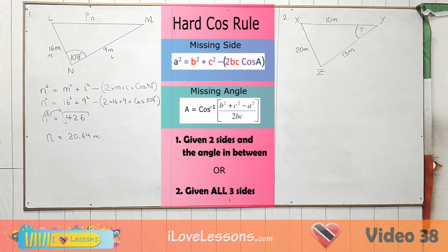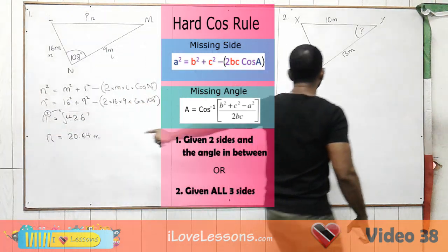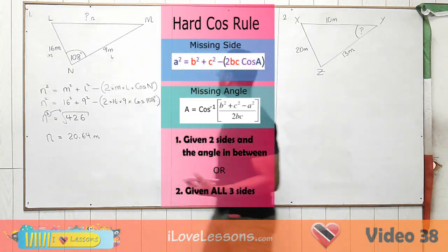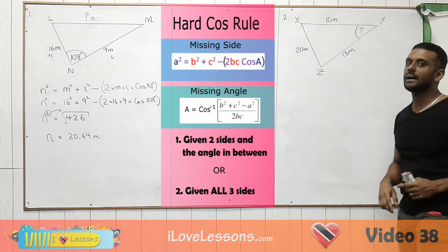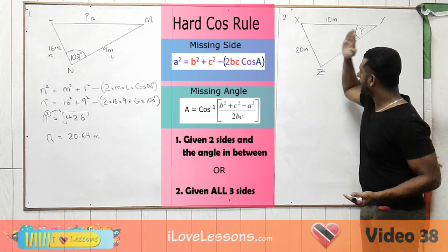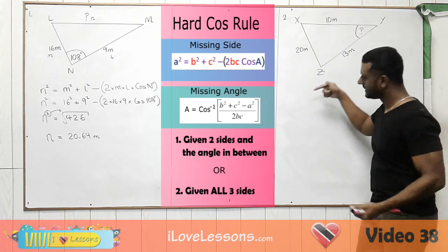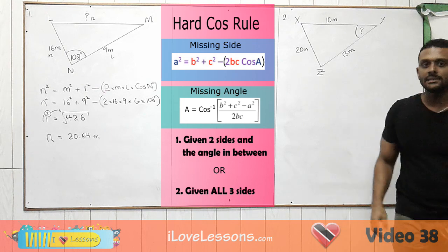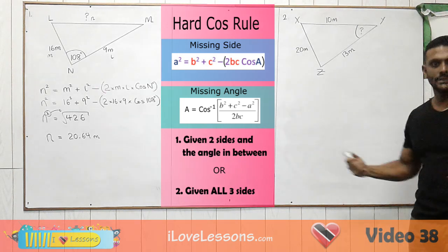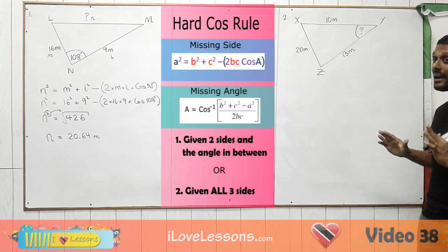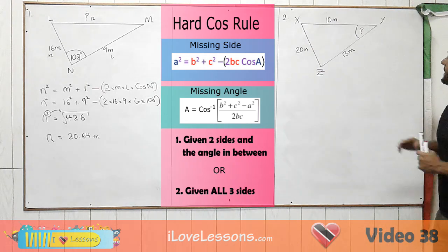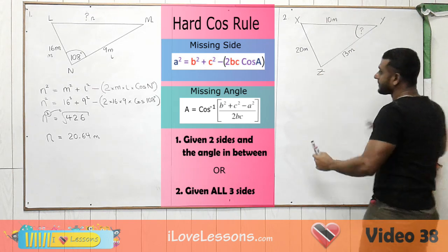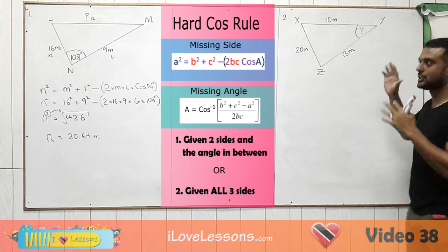In the second question, an angle is missing rather than a side. Let's confirm we're allowed to use the hard cosine rule: we have the length of all three sides — 10, 20, and 13 — and when given all three sides we are allowed to use it. Since we're trying to find a missing angle, we need to use the missing angle formula, not the missing side formula. The letters in this question are different to the formula letters, so we need to adjust again.